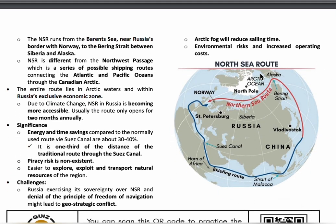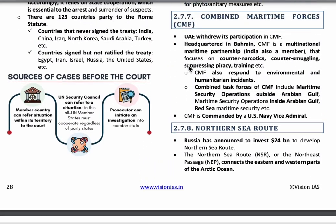The final topic is the Northern Sea Route (NSR). The Northern Sea Route, or Northeast Passage, connects the eastern and western parts of the Arctic Ocean. The entire route lies within Russia's Exclusive Economic Zone. Russia recently announced an investment of 24 billion dollars to develop the Northern Sea Route. Challenges include geostrategic conflict if Russia exercises sovereignty over the route, reduced sailing time due to Arctic fog, environmental risks, and increased operational costs. This concludes the complete overview of June month international relations current affairs.